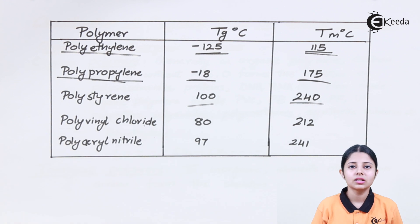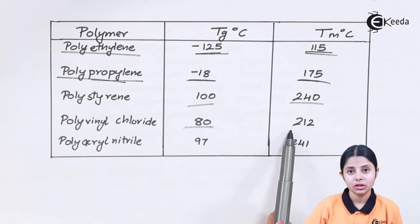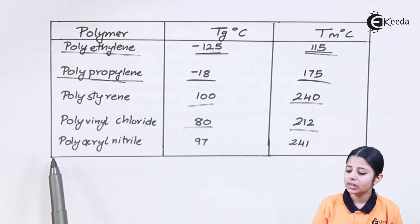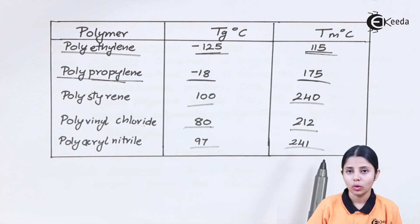Polyvinyl chloride PVC, it is one of the most commonly used plastic for making pipes which carries water. For PVC I have Tg as 80 and Tm as 212. And finally we have polyacrylonitrile with Tg as 97 and Tm as 241.